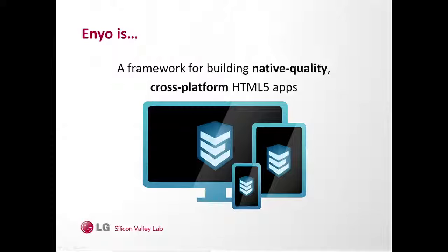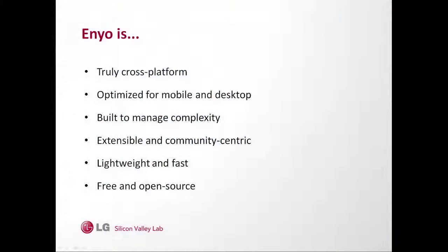So what is Enyo? Enyo is a cross-platform framework for building native-quality cross-platform HTML5 apps. Basically, what that means is that with Enyo, you write once and use it in the same framework to develop apps across multiple platforms — the web, desktop, and mobile. Enyo is truly cross-platform, optimized for mobile and desktop. It was built with mobile in mind and designed to scale well across a variety of form factors. The core is about 30K when compressed, and it's specially designed for speed and responsiveness on all platforms.